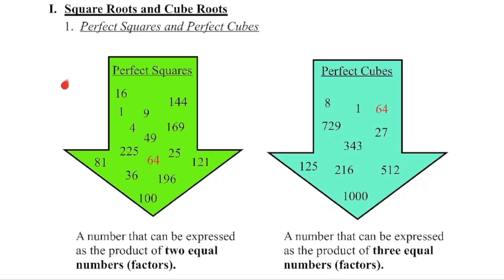Each of these numbers in the green arrow on the left is a perfect square because if I take that number of rocks, I'm able to build a square out of it. I'll have equal number of rocks on both the base as well as the height. Each of these numbers on the right is a perfect cube because if I take that number of rocks, I'm able to build a cube out of them.